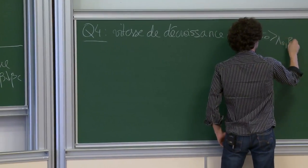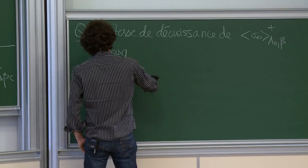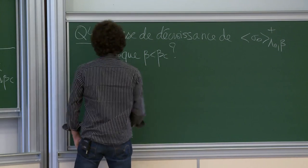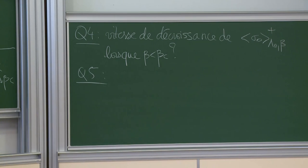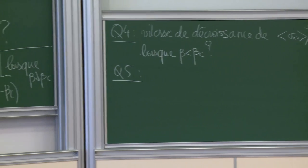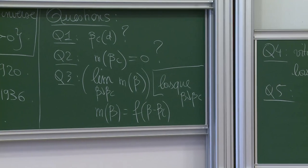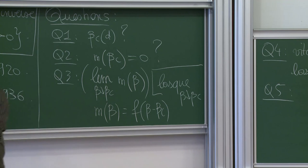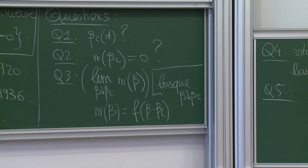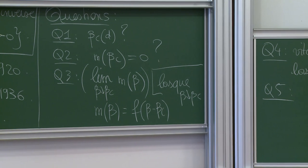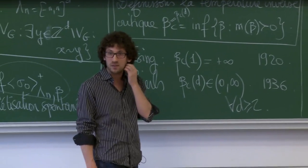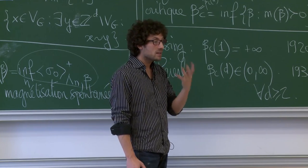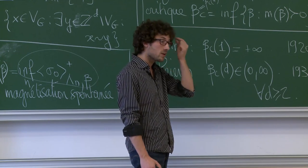Question 5 — peut-être la plus importante — : comment décrire ce qui se passe exactement au point critique β_c ? Comprendre le comportement de m(β) quand β → β_c nécessite de comprendre ce qui se passe précisément à β_c. La continuité à droite de m est gratuite ; montrer que m(β_c) = 0 prouverait la continuité de m.